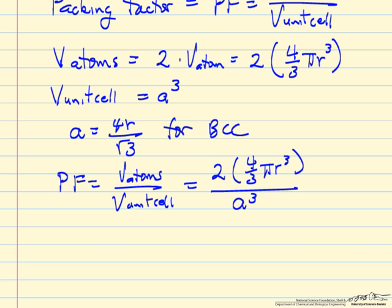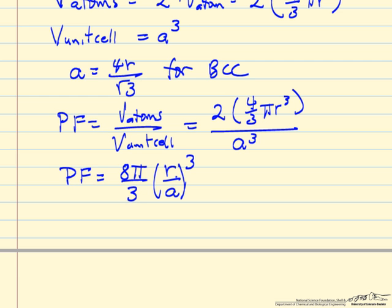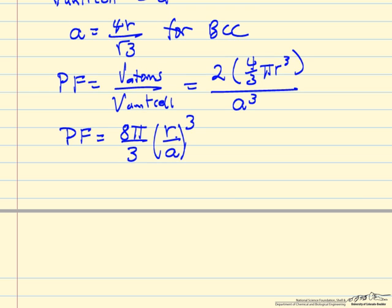We have a relationship between R and A, so just rearrange in terms of R over A, and from our equation up here, we know that R over A is just the square root of 3 over 4, so we can substitute in here for R over A.